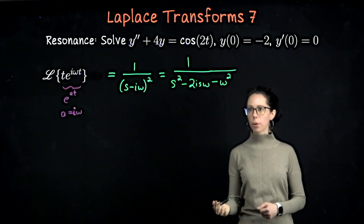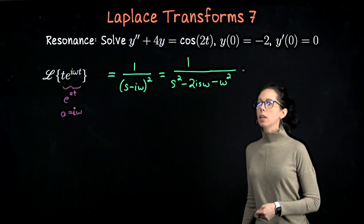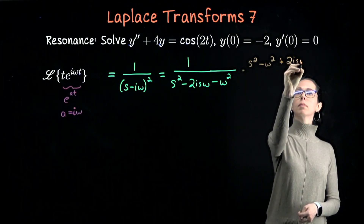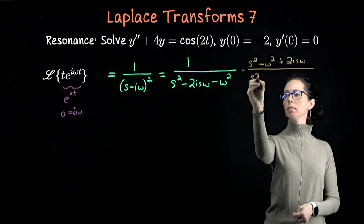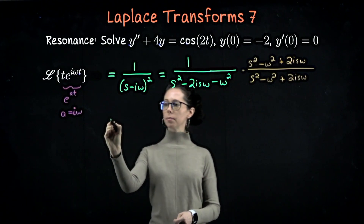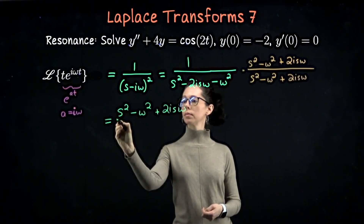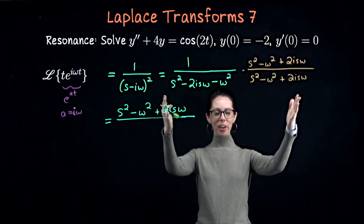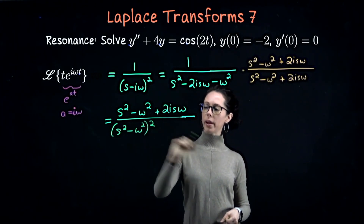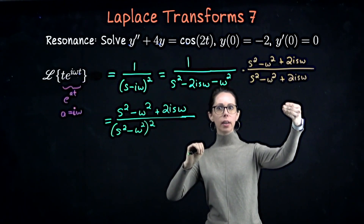We're going to multiply top and bottom by the complex conjugate, which looks like s squared minus omega squared plus 2i s omega. The numerator becomes s squared minus omega squared plus 2i s omega. The denominator is the real part squared — that's s squared minus omega squared, all squared — plus the imaginary parts multiplied together: negative 2i times 2i gives positive 4 s squared omega squared.